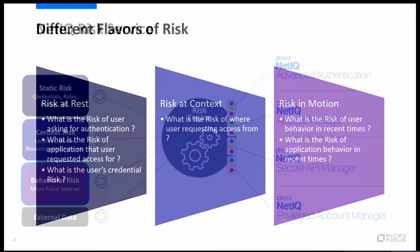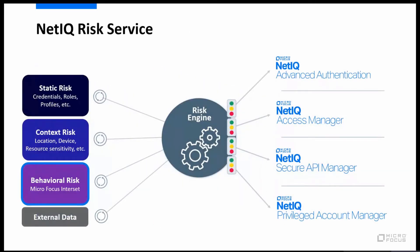To put that in perspective, this is how it all comes together. You're seeing here static risk, risk at rest, context, and behavioral risk. Behavioral risk is really the focus of this presentation because it's driving more of the intelligent processes. We're combining all of these different factors and consuming them into our risk engine to provide the right access experience as it relates to that user's current risk.